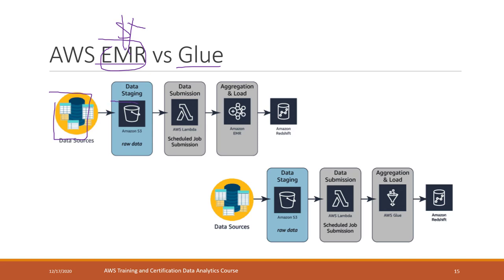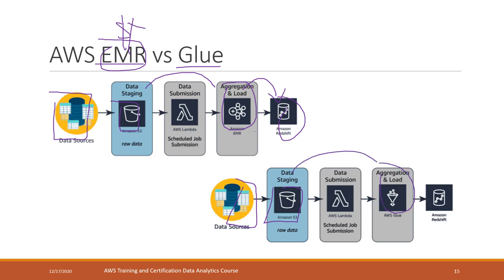There are multiple ways to approach this. You can use S3 to store your raw data as the data resource, then use EMR to do the ETL process and save the data into your data warehouse, structured storage, or database.